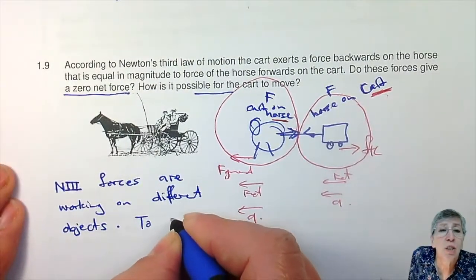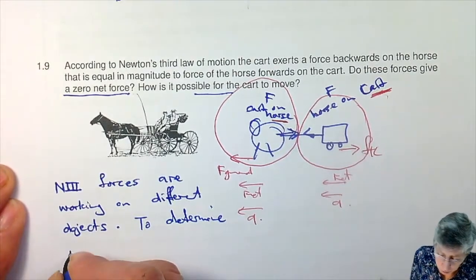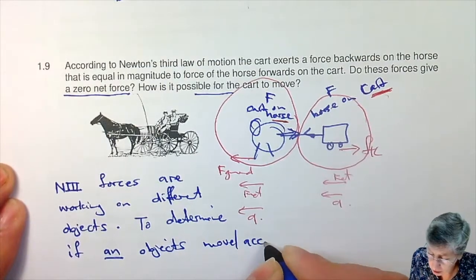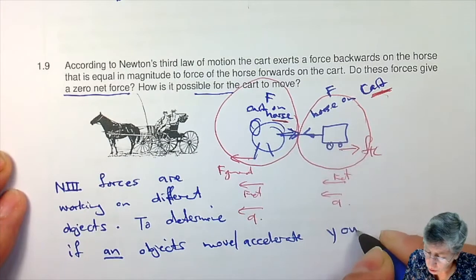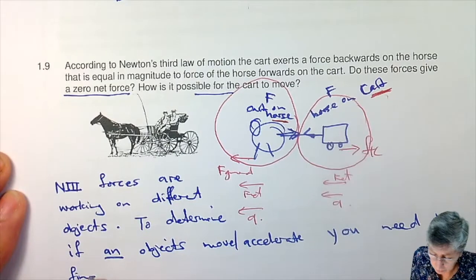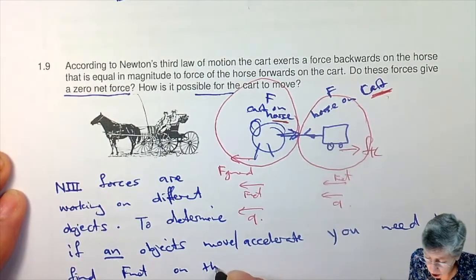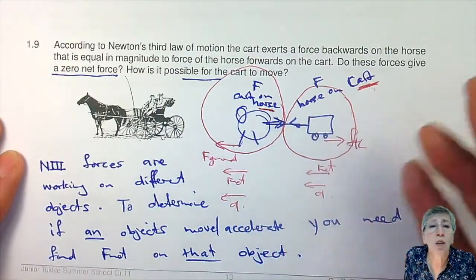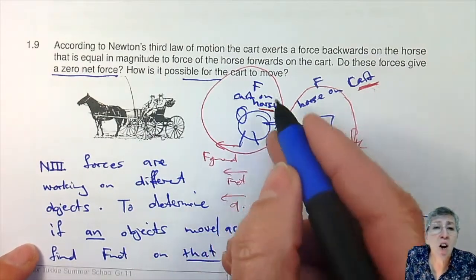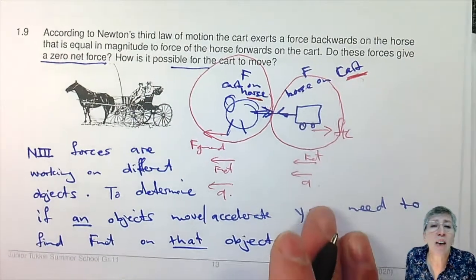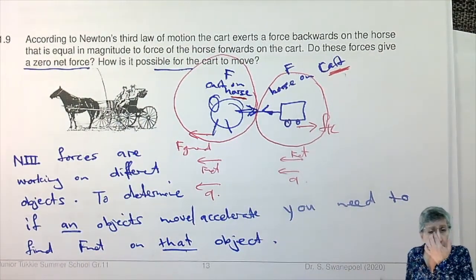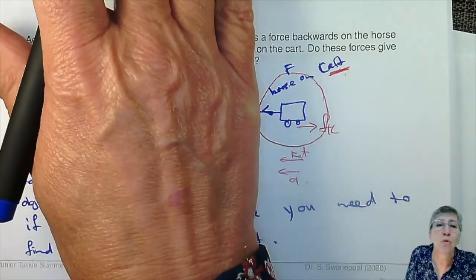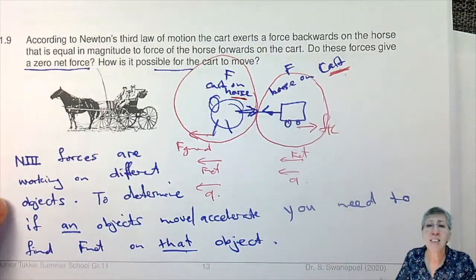To determine if a single object moves or accelerates, you need to find the net force on that object. When you look at Newton's 3rd force pairs like horse on cart and cart on horse, you never consider them together. To determine if the horse or the cart accelerates, look only at the net force on that one object. The net force on the horse is in the forward direction and the net force on the cart is in the forward direction. That is all for Newton's third law.